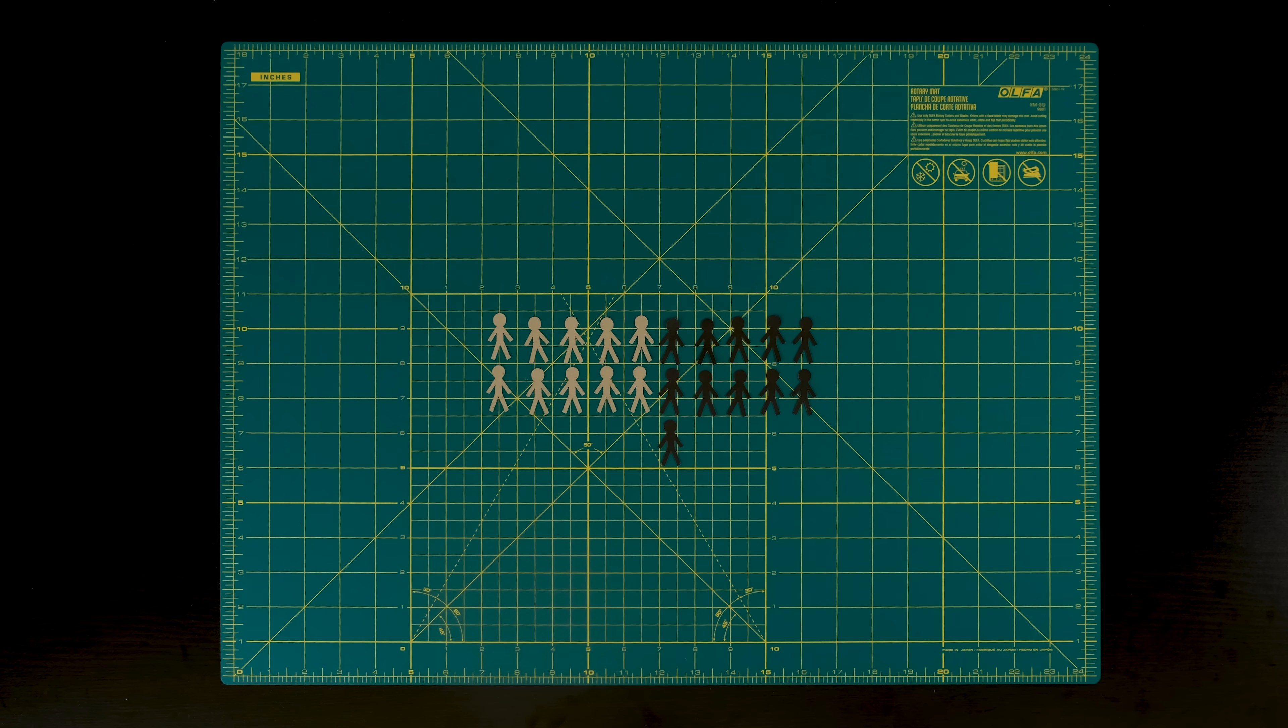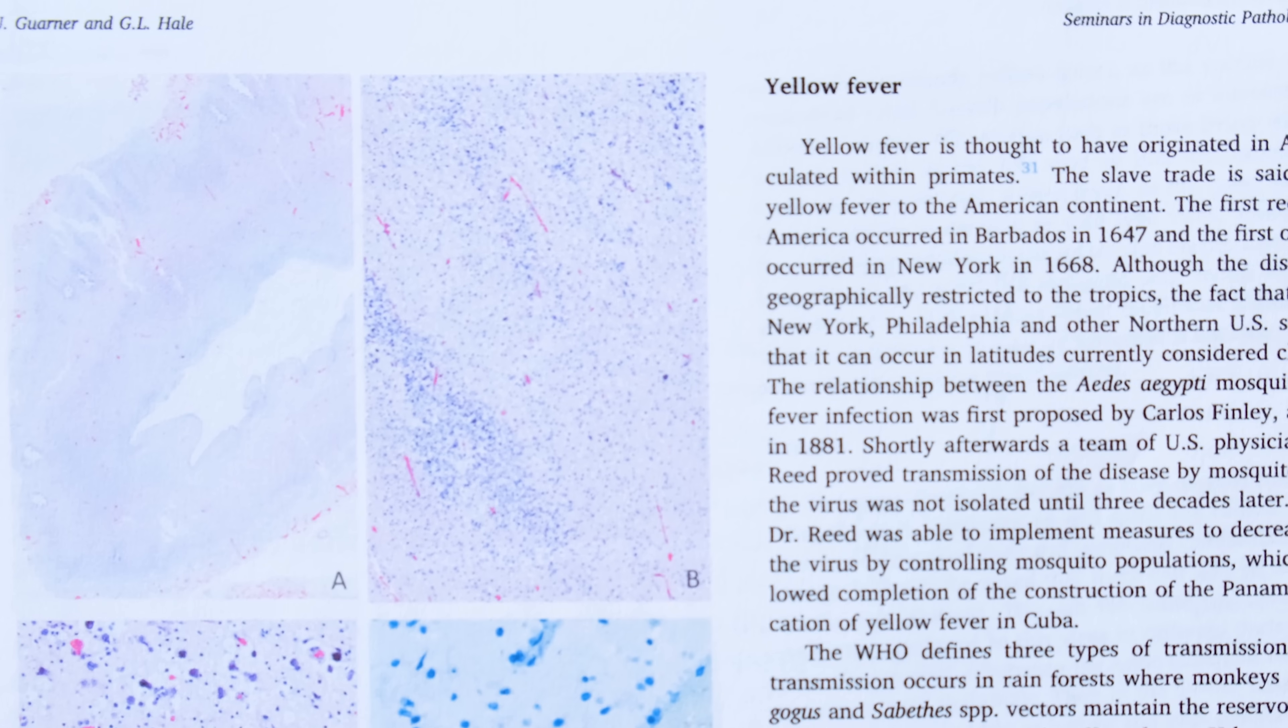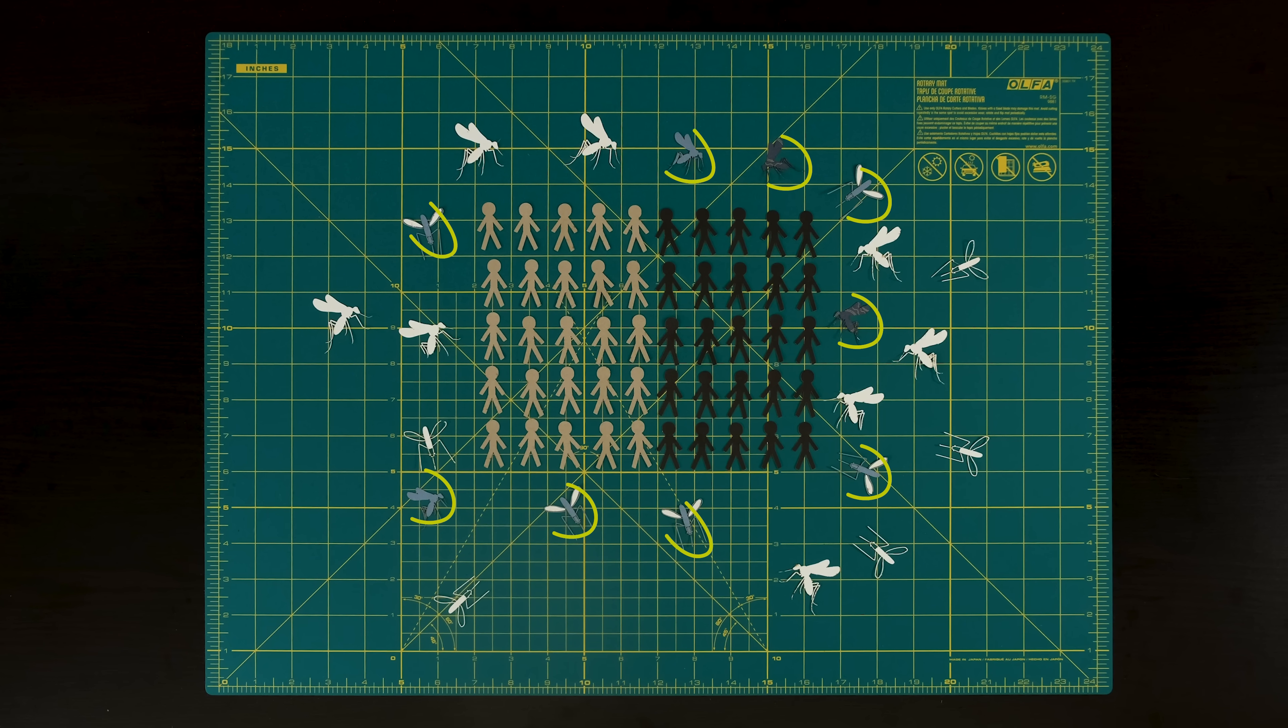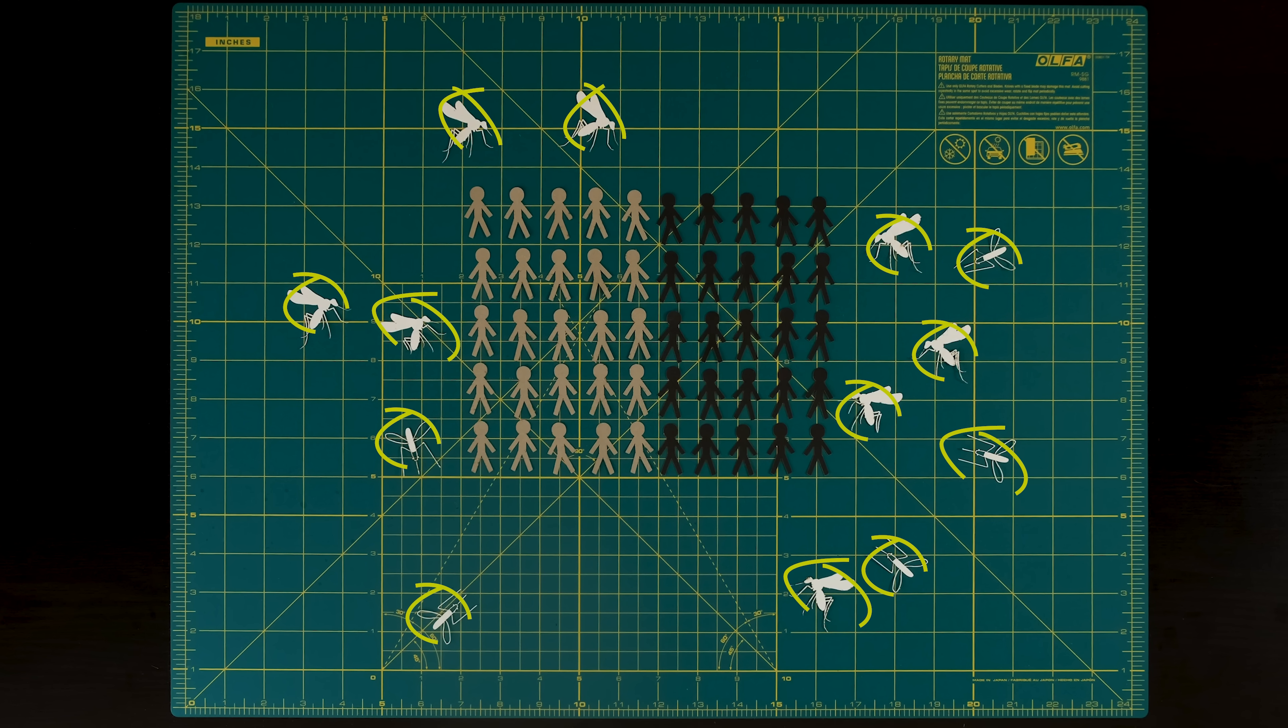Many experts have estimated that mosquitoes are responsible for up to 50% of human deaths ever. Diseases like dengue, yellow fever, and malaria continue to kill almost a million people each year. But genetic modifications can eliminate the disease-carrying genes within mosquitoes. And some scientists have even gone so far as to suggest that using CRISPR, we should eliminate the mosquito entirely.